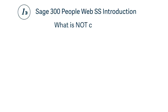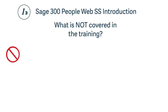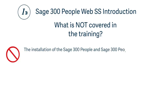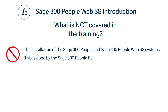What is not covered in the training? The installation of the Sage 300 People and Sage 300 People Web SS systems. This is done by the Sage 300 People business partner and technical teams.